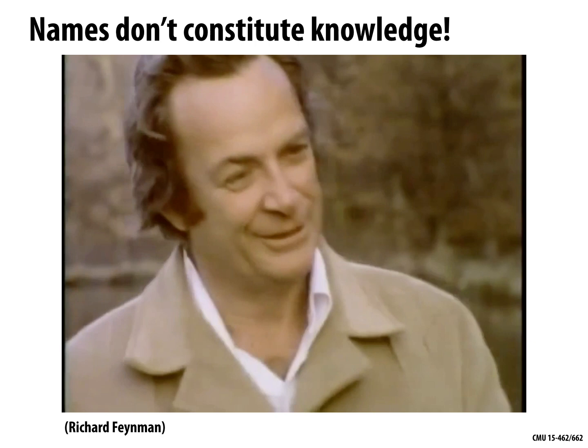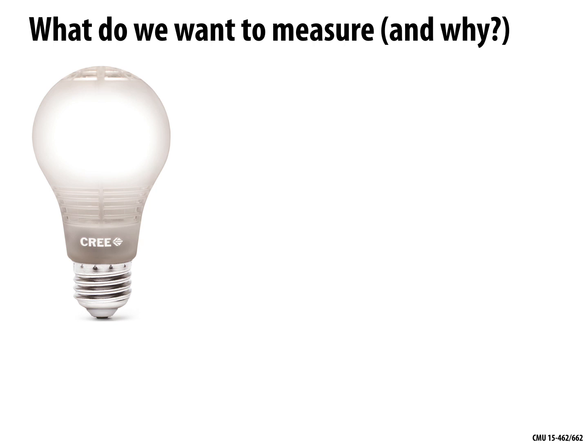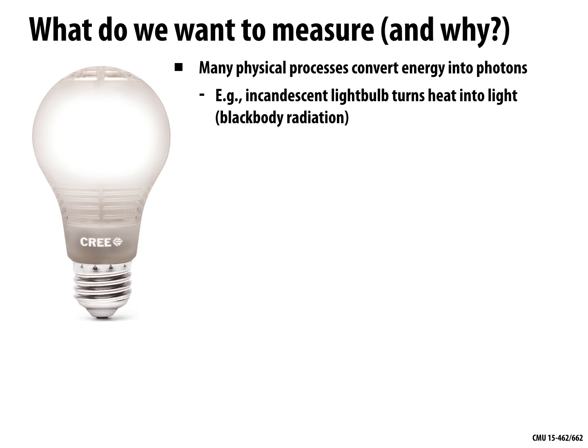With that in mind, let's talk about what we want to measure and why. The basic idea is that many physical processes convert some kind of energy, like heat, into photons. An incandescent light bulb turns heat into light via black body radiation; nuclear fusion in stars generates photons, and so on. Lots of different places photons can come from.